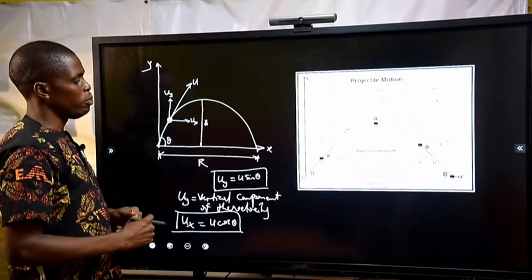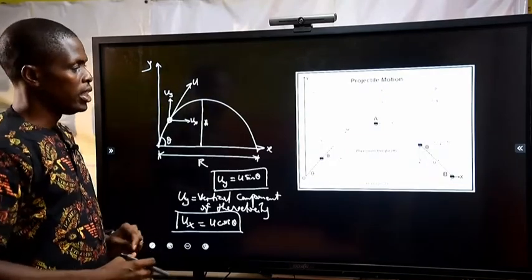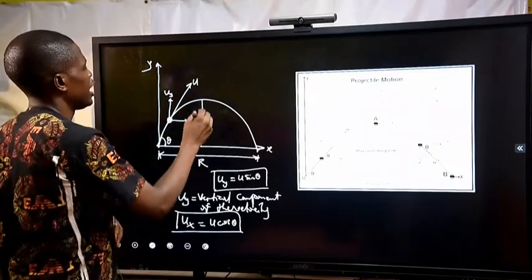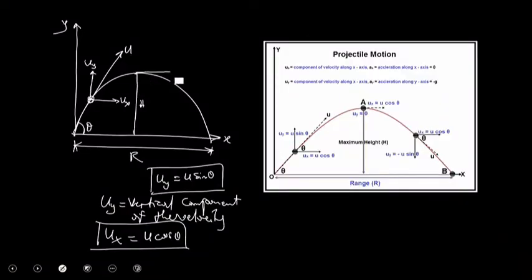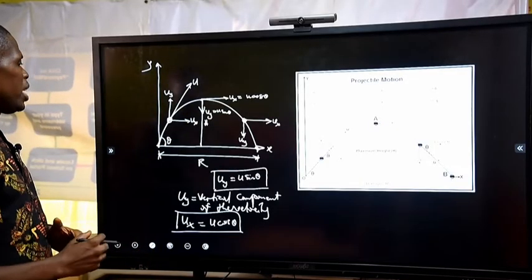We have these two components which we'll use throughout the lesson. At the maximum height, the object has only one component, which is ux equal to u cos theta. The vertical component here would be uy equal to u sin theta, but in the downward direction it is negative. As the object comes down, it still has the horizontal component and the vertical component acting downward until it strikes the final destination.